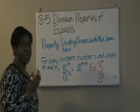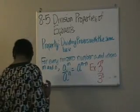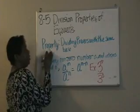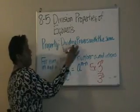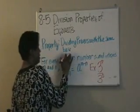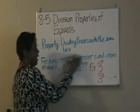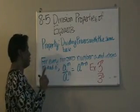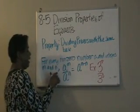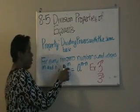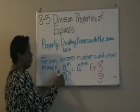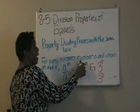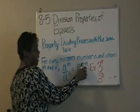Properties of exponents in the Prentice Hall book on page 417. This is the property you need to know for dividing powers with the same base. For every non-zero number a, and integers m and n, a raised to the m power over a to the nth power equals a to the m minus n.